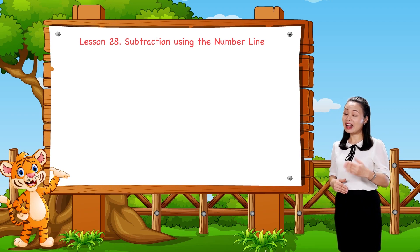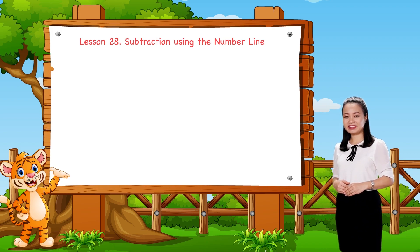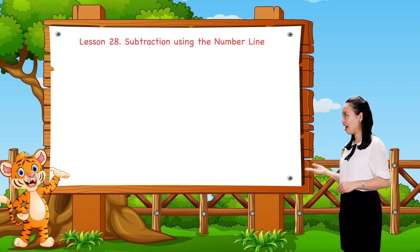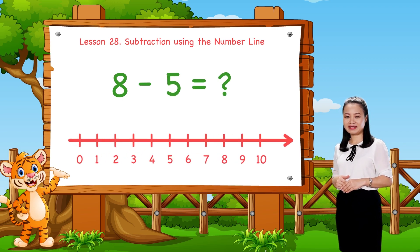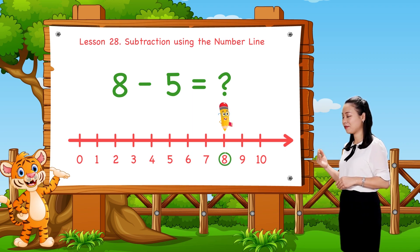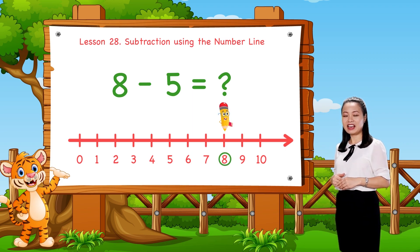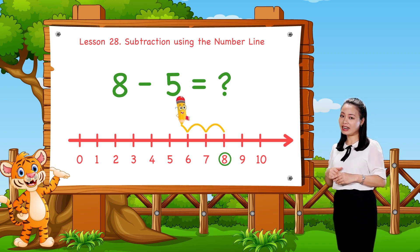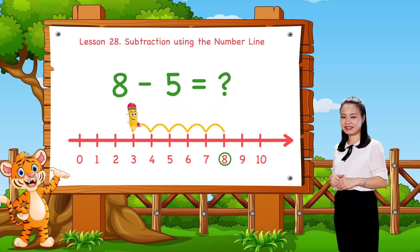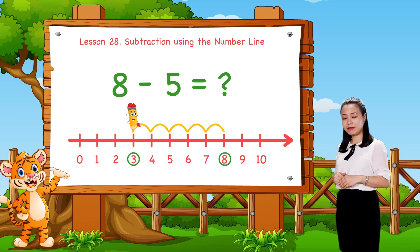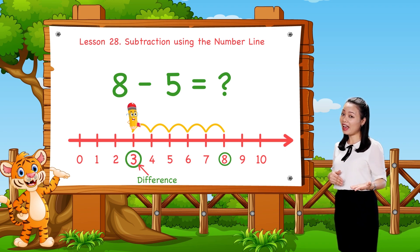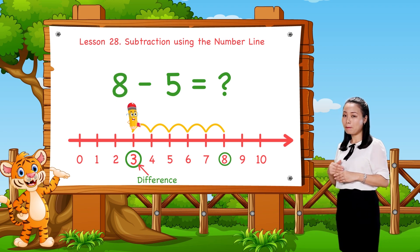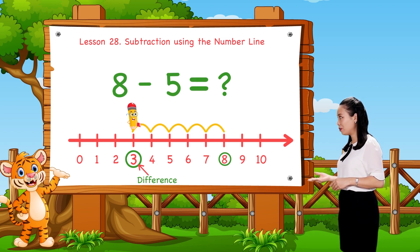Now, let's take another example. Let's find 8 minus 5 using the number line. We start from number 8, then jump 5 numbers to the left. Then see the number where we land to find the difference. Here, we land at number 3. Therefore, 8 minus 5 equals 3.